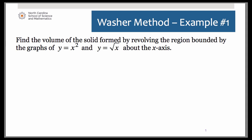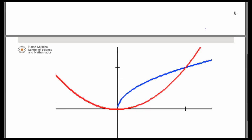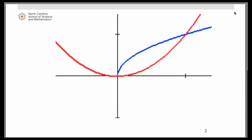Here we are asked to find the volume of the solid formed by revolving the region bounded by y equals x squared and y equals square root of x about the x-axis. If you want to go ahead and graph those on your calculator, I've already done so and adjusted my window a little bit.